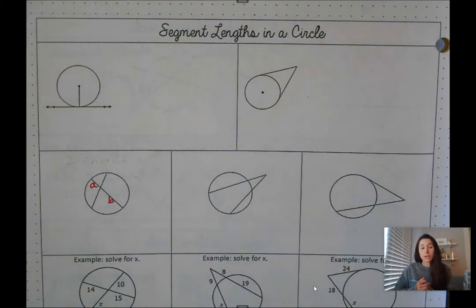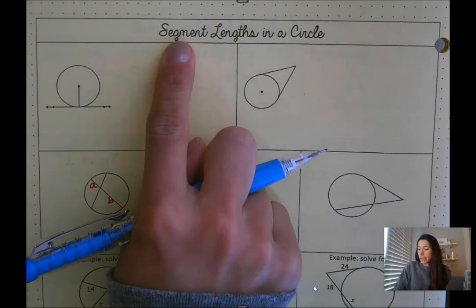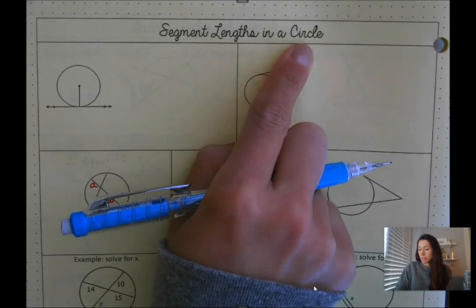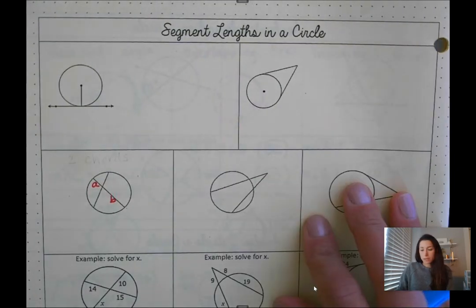Hi, we're on your toolkit page 21. We're looking at segment lengths in a circle and I'm actually going to start with the bottom part of this toolkit page.